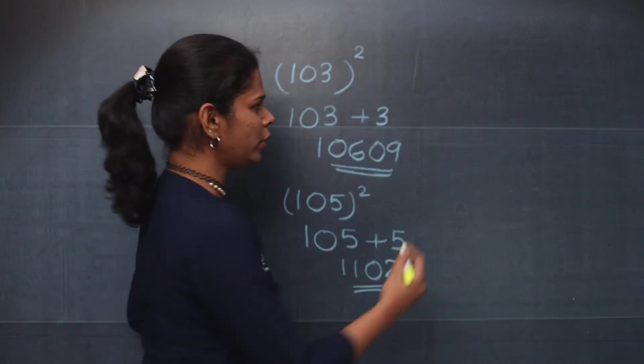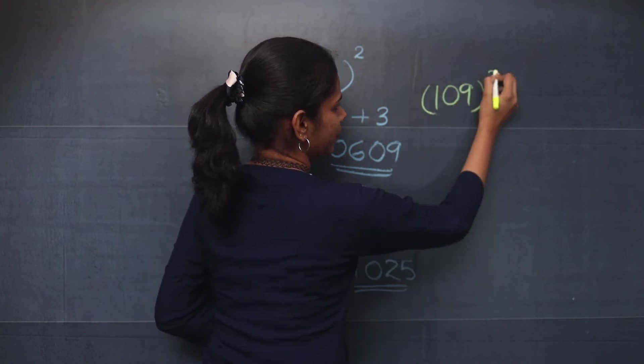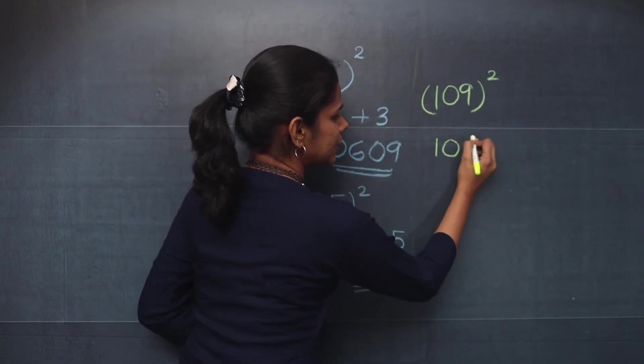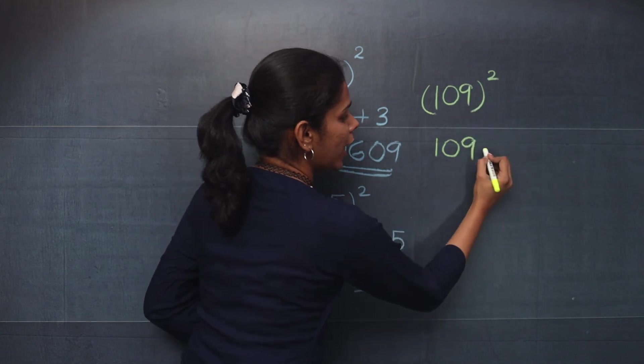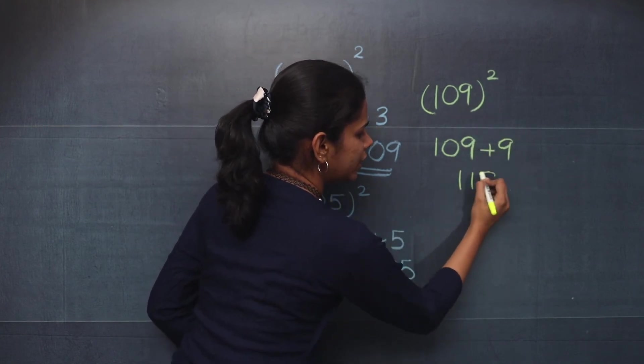Now let's check one more: 109, the whole square. You will write the number as such. And then you will add 9 to this number. You will get 118.